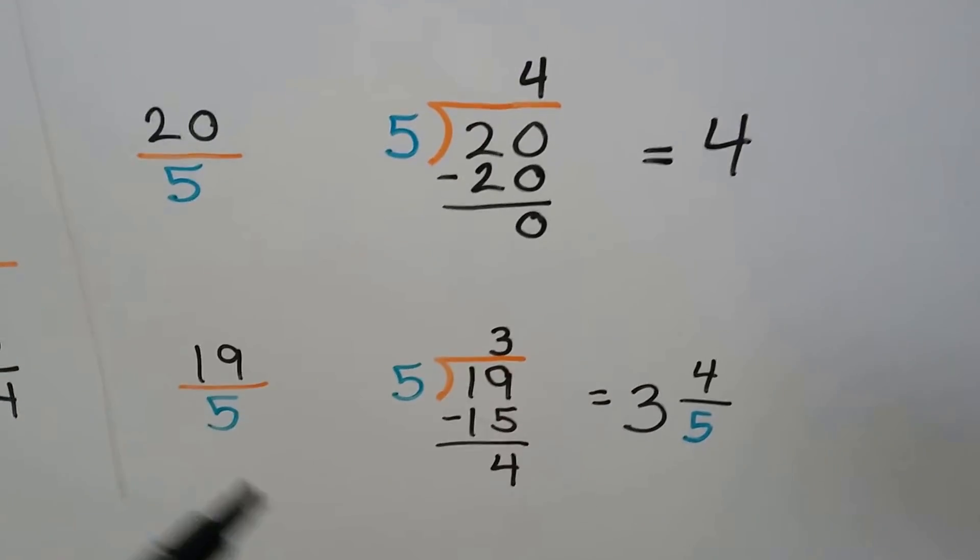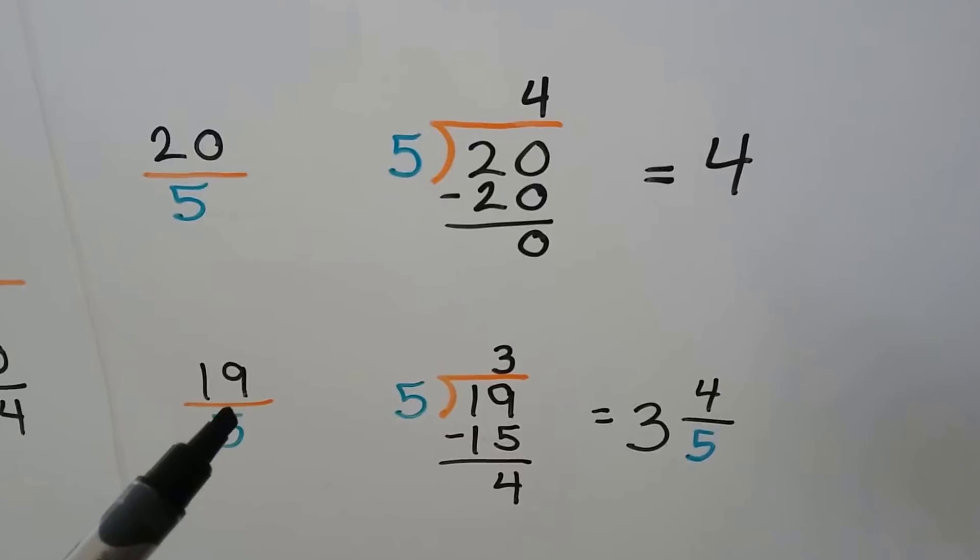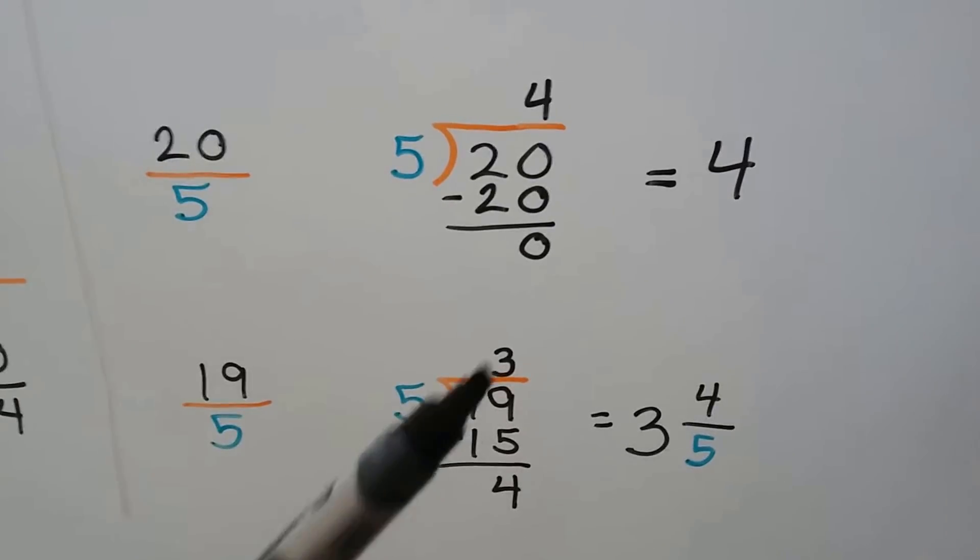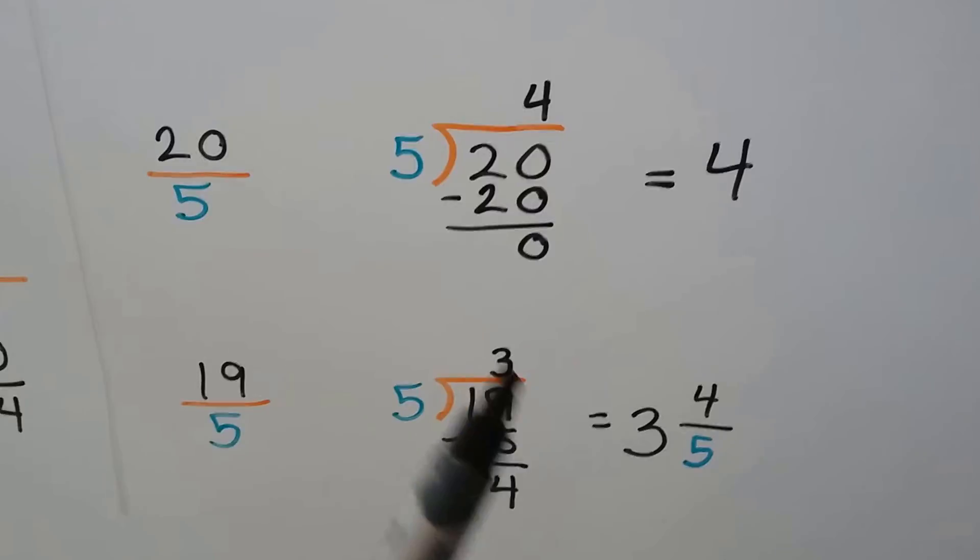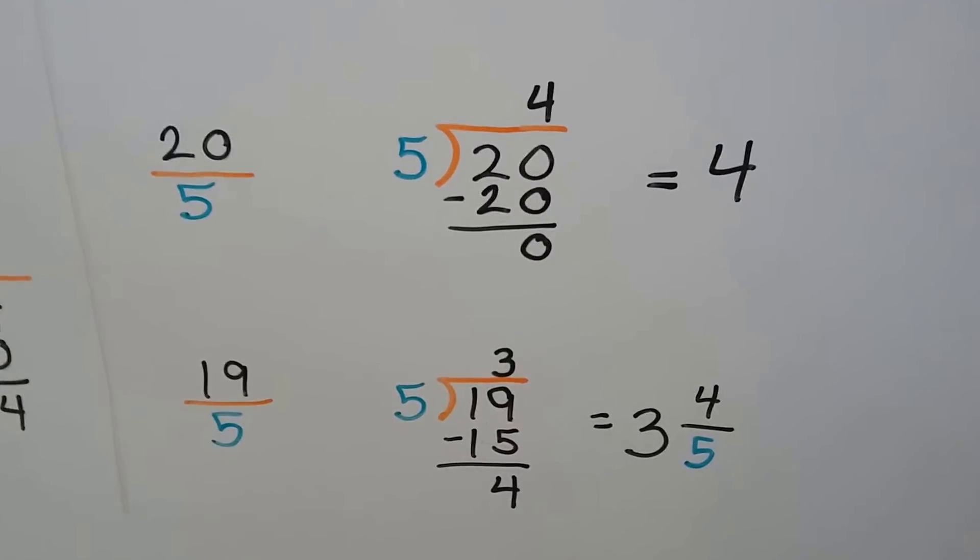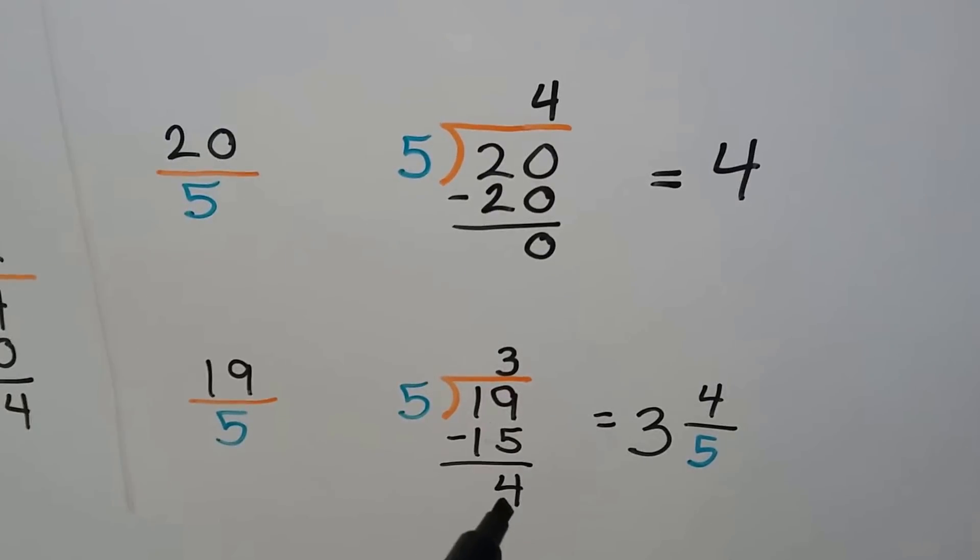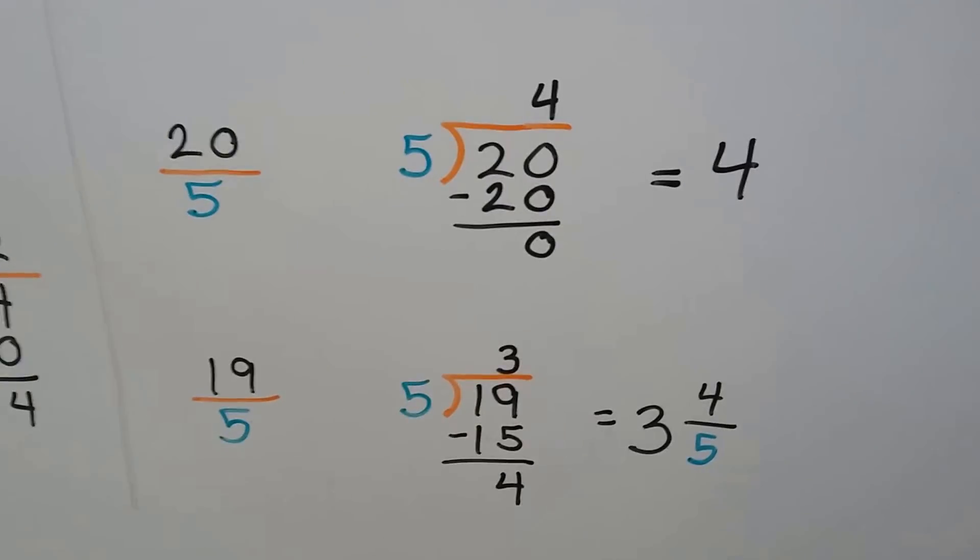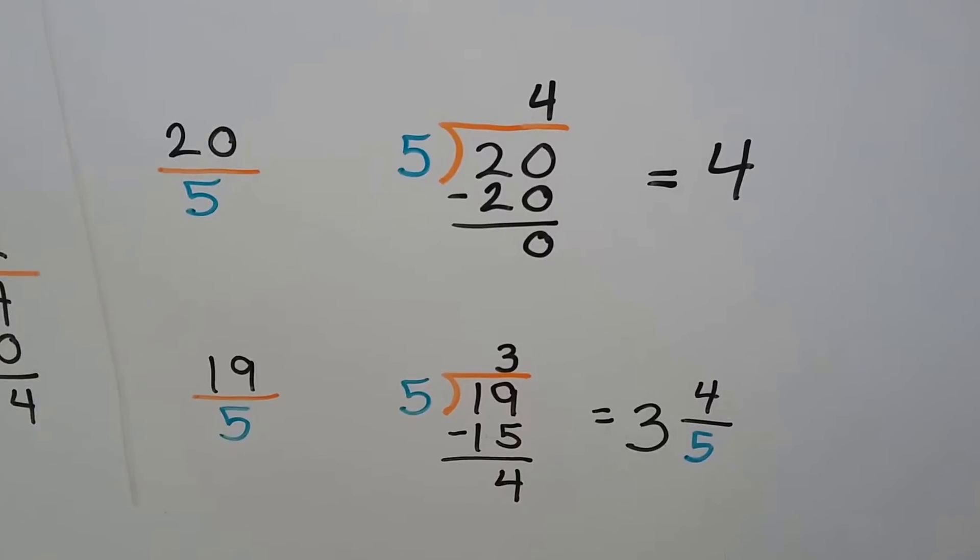19 fifths, well now we will have a remainder because it won't fit in evenly. 19 divided by 5. 5 goes into 19 three times. So our whole number is going to be a 3 and our fraction is going to be the 4 as the numerator that is left over and the 5 will be the denominator. We have 3 and 4 fifths.